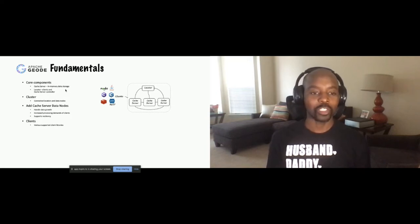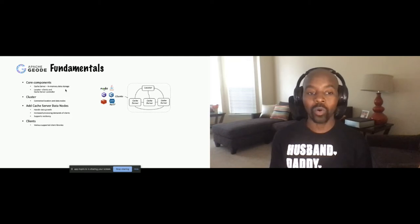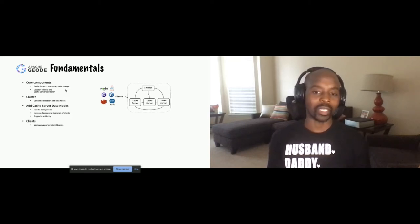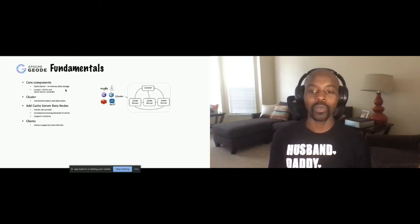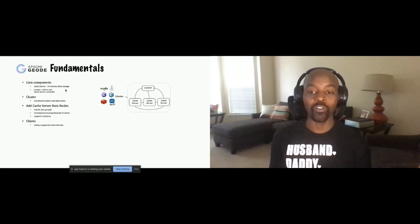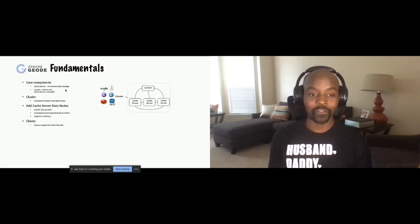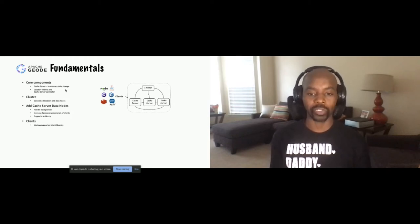You can support WAN replication, so you can have data replicated across data centers. If you have one data center on the East Coast and another on the West Coast, you can have that data replicated in a near real-time fashion so the data becomes eventually consistent. That supports your active-active data access, active-passive, or disaster recovery across data centers.